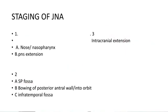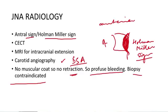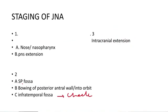The staging of JNA: Stage 1a — confined to the nose and nasopharynx; Stage 1b — extends into any paranasal sinus; Stage 2a — confined to the sphenopalatine fossa; Stage 2b — bowing of the posterior antral wall or extension into the orbit; Stage 2c — extension into the infratemporal fossa; Stage 3 — intracranial extension. The bowing of the posterior antral wall corresponds to the antral sign seen on X-ray.